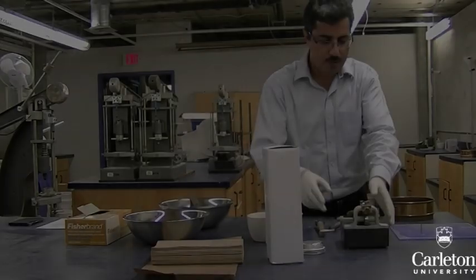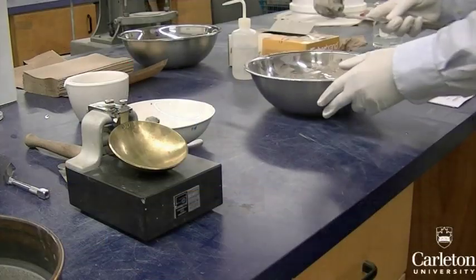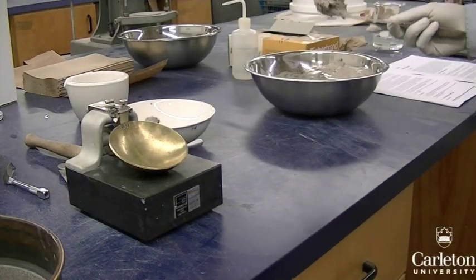To measure the liquid limit of soil, you will use this device known as a Casagrande cup. Once your soil sample is prepared, you can fill the brass cup.